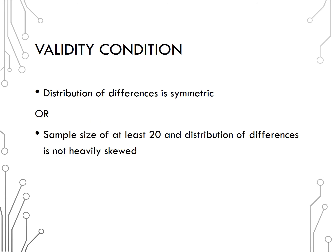In sections 3.2 and 3.3, the validity condition required for a single quantitative variable is that either the sample data must be symmetric, or we must have a sample size of at least 20, and the sampling distribution must not be heavily skewed.